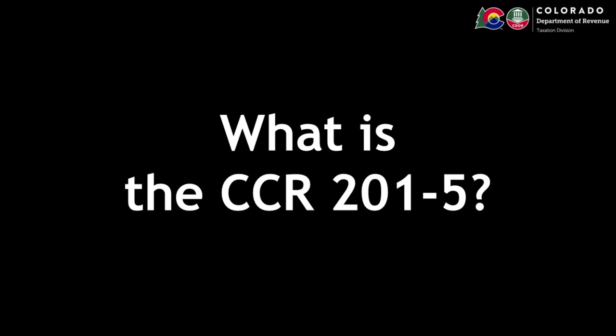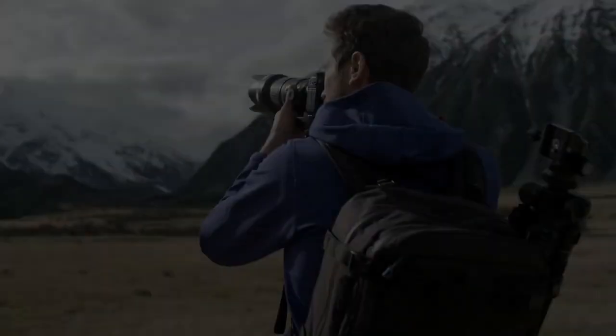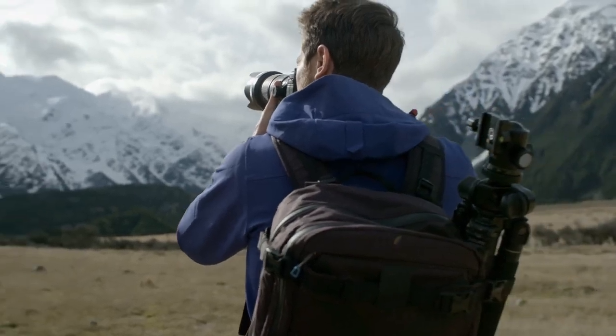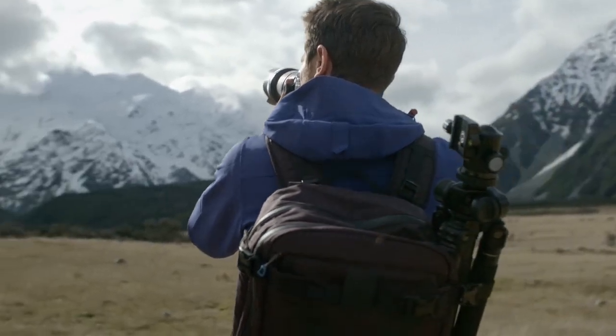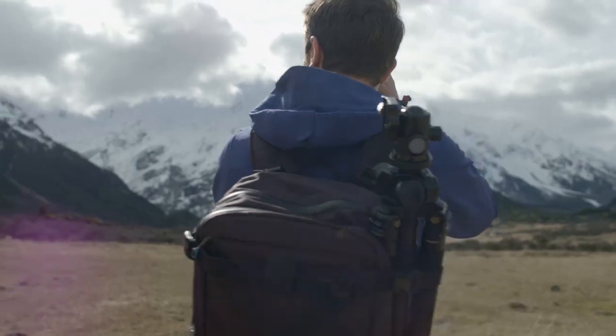What is the CCR 201-5? The CCR 201-5 Special Rules for Specific Businesses contains tax information regarding specific businesses. Examples include catering, contracting, photography, upholstery, the service industry, and many more.